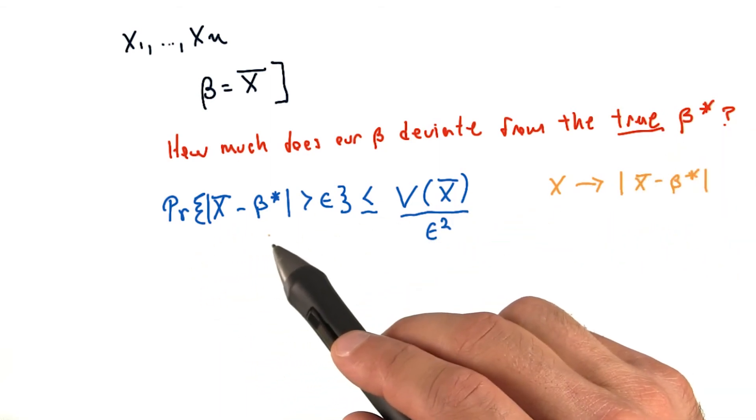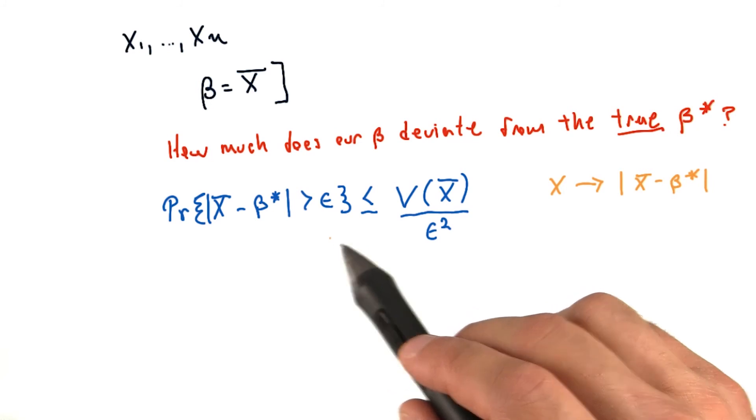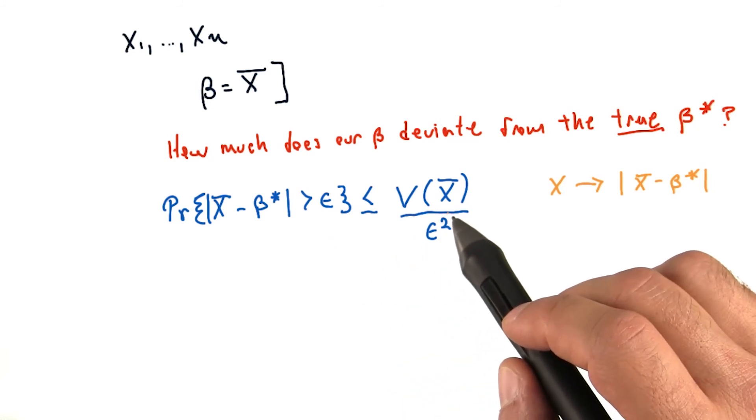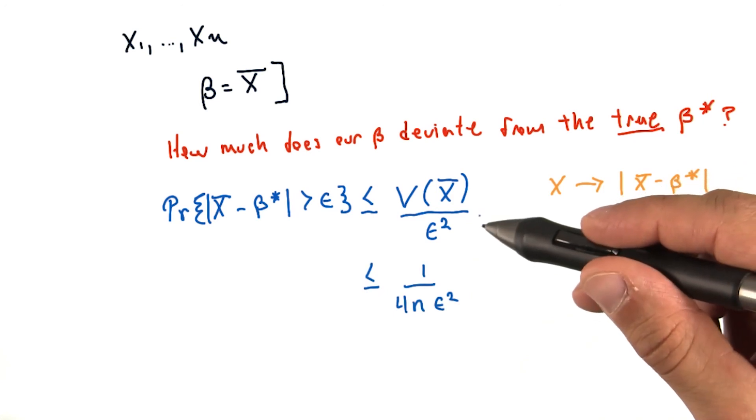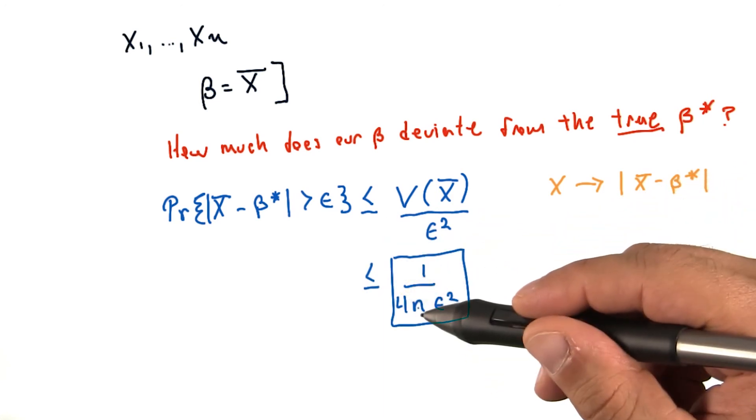The probability of x bar minus beta star is greater than epsilon is less than or equal to the variance of x bar divided by epsilon squared. And that number turns out to be less than 1 divided by 4n epsilon squared.